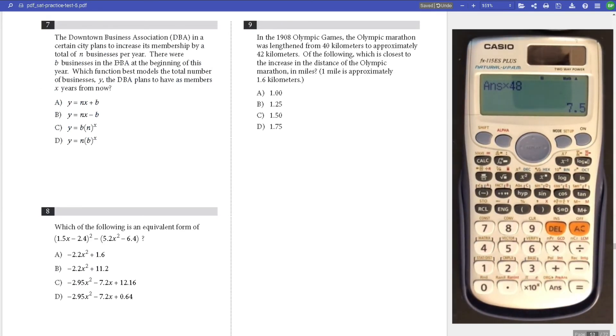Number 7, association increases membership by N businesses per year. There were B businesses at the beginning. Which expresses the model for the number of businesses? N is an increase, so that's slope. It's a total number, not a percentage, so it's not exponential. At the beginning, that's the starting, so it's B. It's not subtracted because there can't be negative businesses at the beginning of the year.